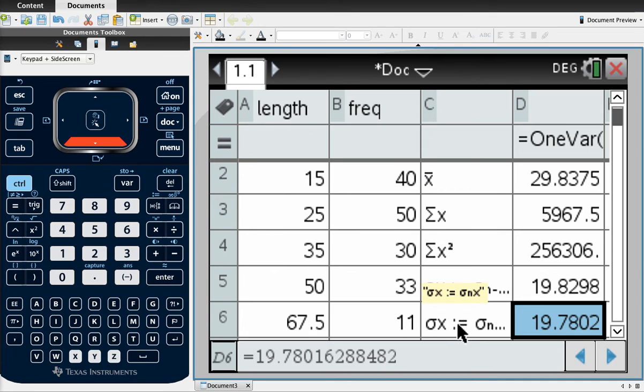OK, so for the standard level course, this is the one we use. We don't ever use this one up here, always this one down here. So that's going to be 19.8.